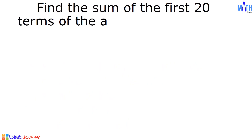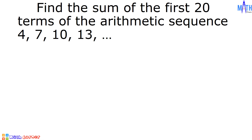Let us have an example. Let us find the sum of the first 20 terms of the arithmetic sequence 4, 7, 10, 13, and so on. In this example, 4 is the first term or A sub 1. Since the difference of any two consecutive terms is 3, the common difference is equal to 3.